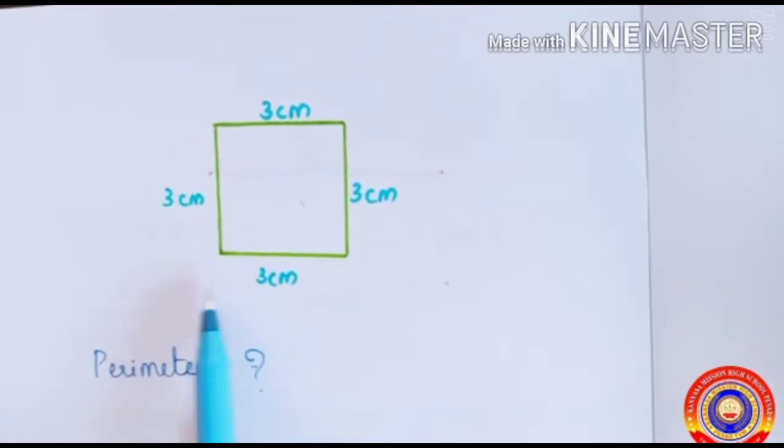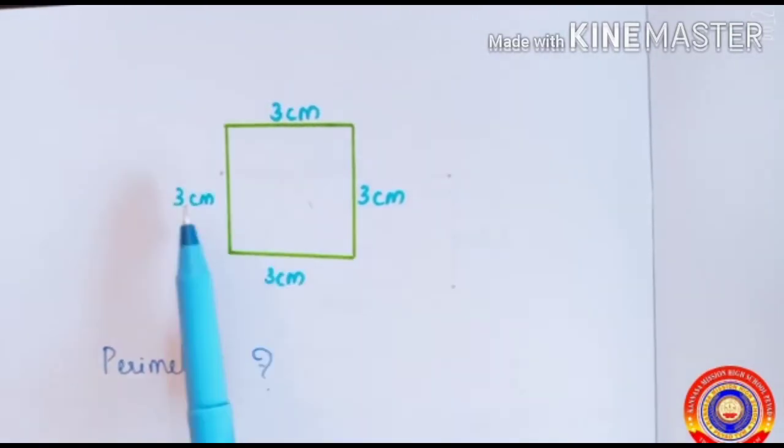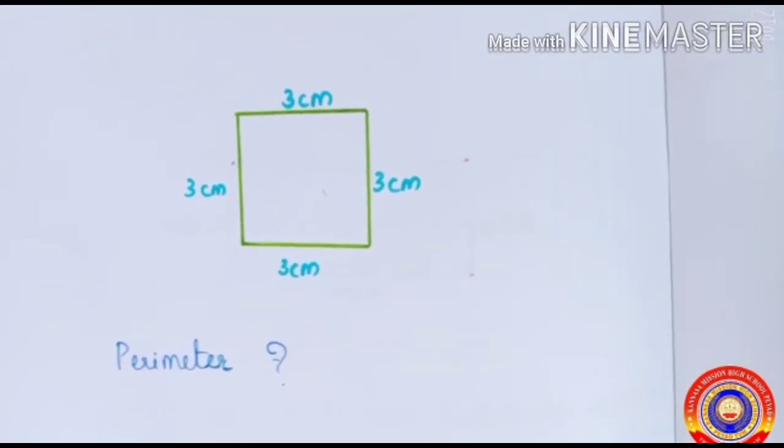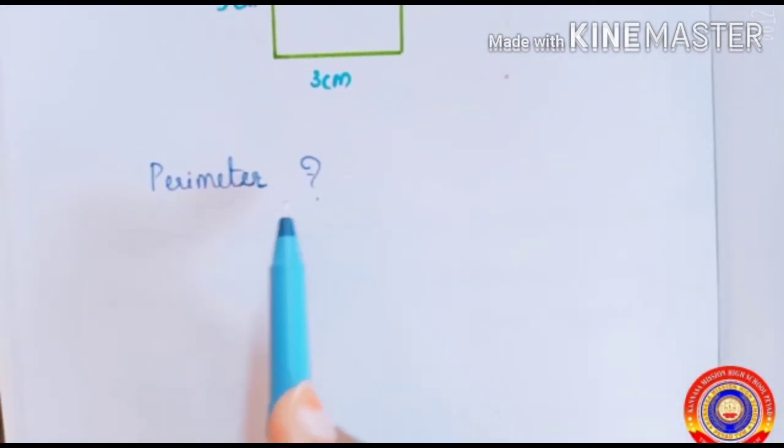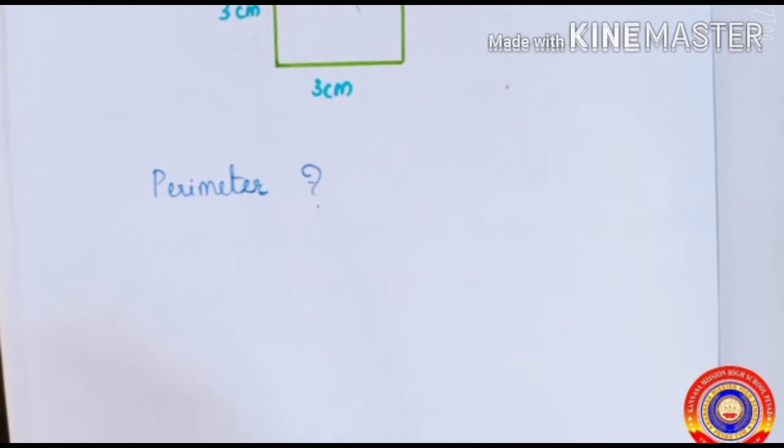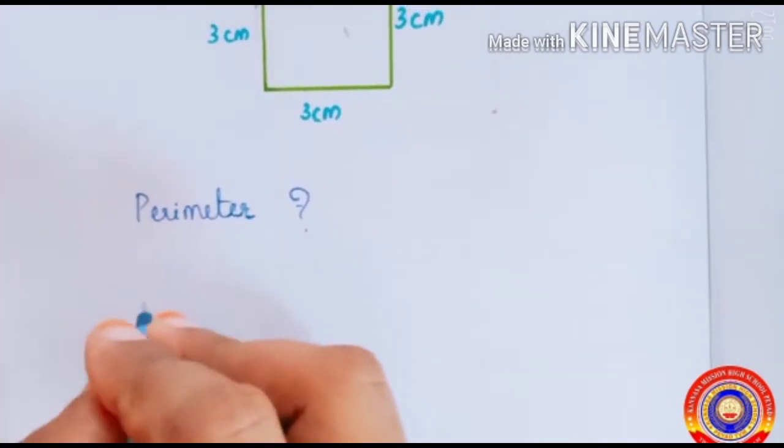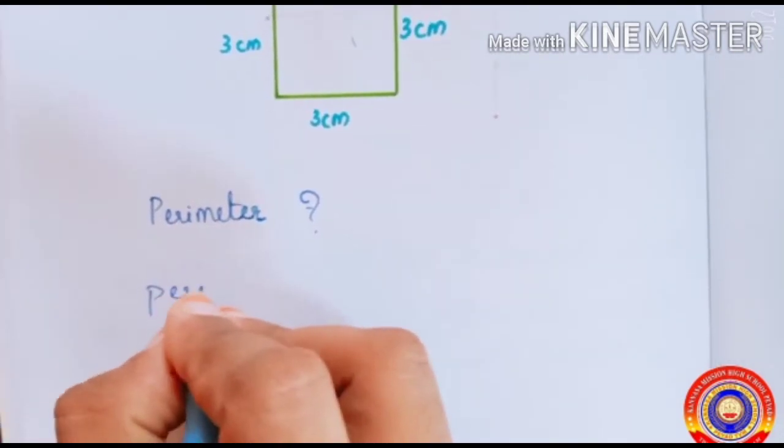See children, this is a square of side three centimeters each, so we have to find the perimeter. What is a perimeter? Perimeter of any square is four times the length of a side. That is, perimeter is equal to sum of four sides.